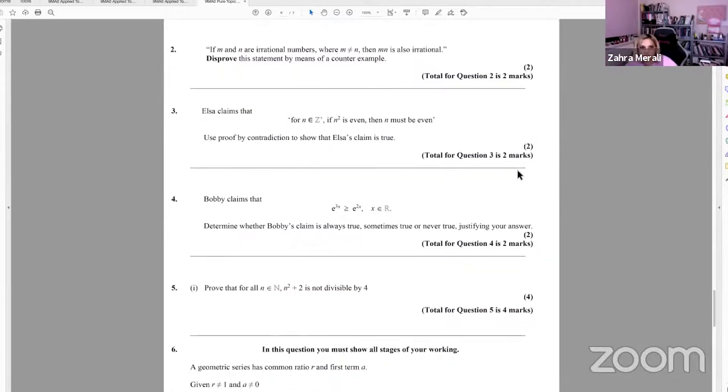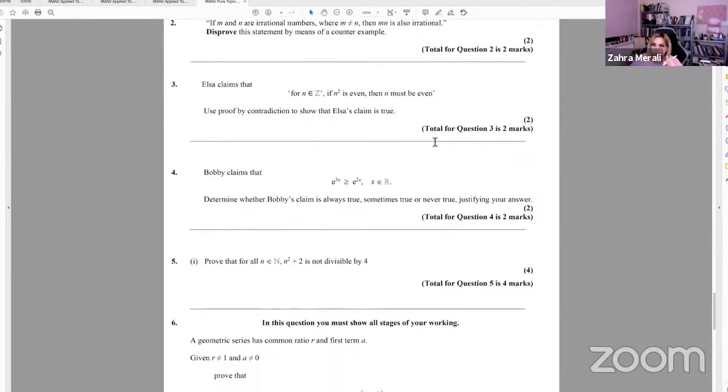Proof by contradictions are that Elsa's claim is true. So when you have a proof by contradiction, the first thing you have to do is write the negation. And that in itself is worth a mark. So we're going to assume that if n squared is even, negation, then n is odd. So when you've got an a, then b, your negation is still if a, then not b. So the if bit doesn't change, right? So we're saying n is odd. So let's take n to be odd. So n equals